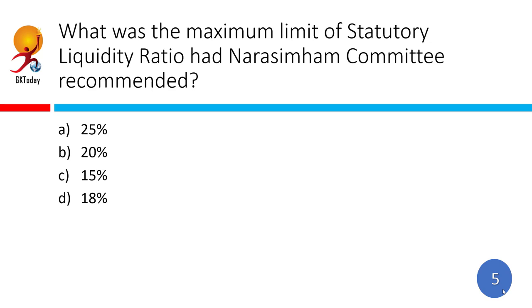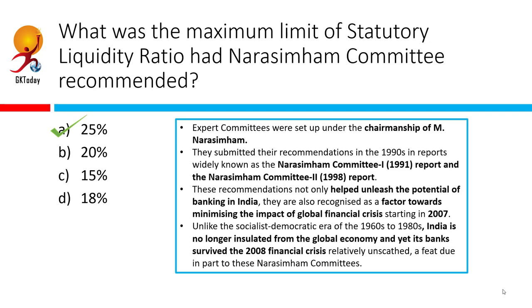What was the maximum limit of the Statutory Liquidity Ratio recommended by the Narasimham Committee? The correct answer is 25%. The Narasimham Committee recommended bringing down the statutory preemptions such as the SLR and the CRR. It recommended that SLR should be reduced to 25% over a period of time, and CRR should be reduced to 10% over a period of time, and if possible, reduced below 10%.